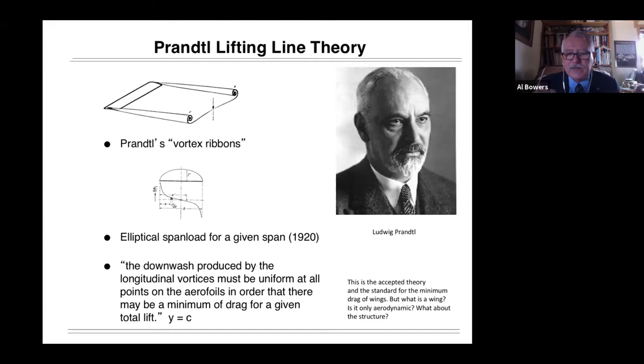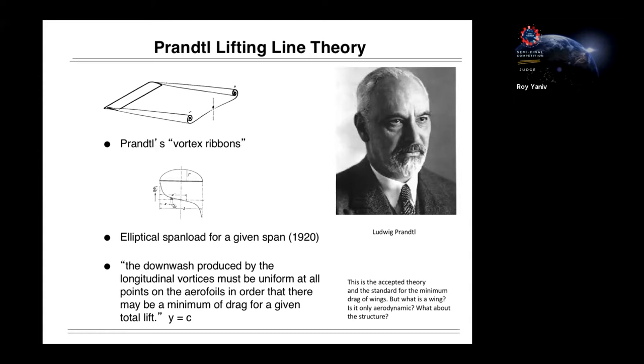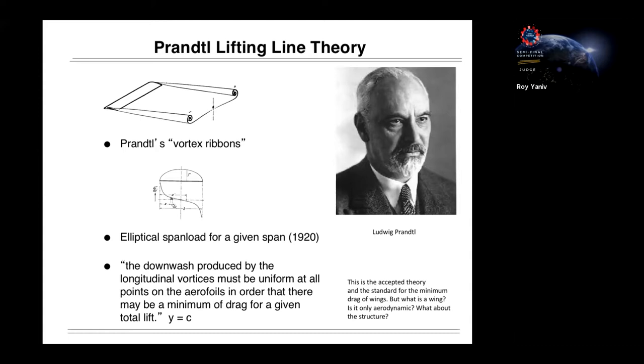And one of the outcomes of that is the downwash in the wake of the wing is constant from one wing tip to another. And this becomes the standard theory for the minimum drag of wings, because it's the minimum drag for a wing of that wingspan. But as we just saw in the Breguet range equation, we know that that's not necessarily the answer we're looking for. And it results in something different.